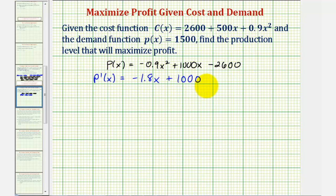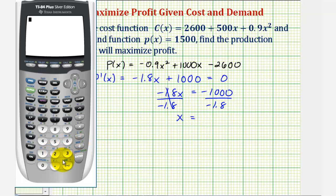Notice how the derivative function is linear, which is never undefined. So to find the critical number, we'll set this equal to zero and solve for x. Subtracting 1000 on both sides, we have negative 1.8x equals negative 1000. Now we'll divide both sides by negative 1.8. We have approximately 555.56.